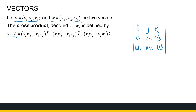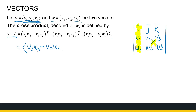Once you've done it a couple of times — and you will have to practice this one — it'll make sense. To find that cross product, writing it in component notation: for the first entry, we ignore the first column and compute V2 times W3 minus V3 times W2. That's the first component.